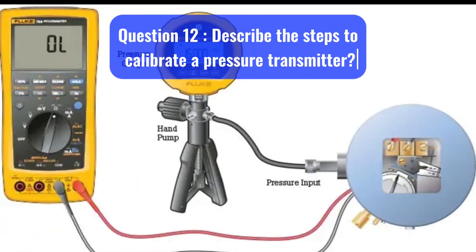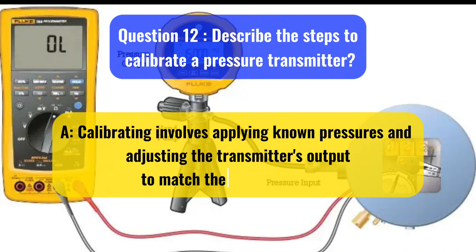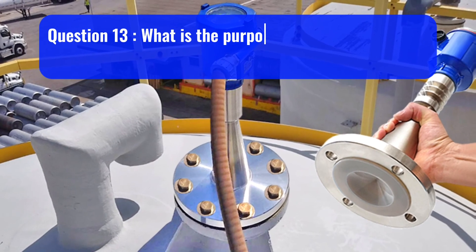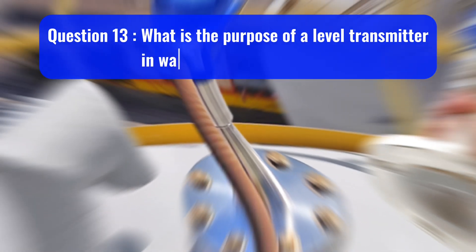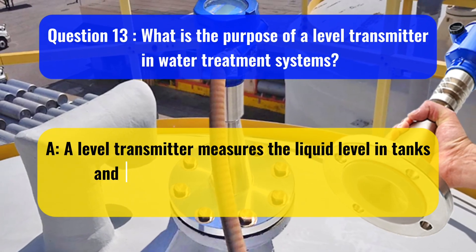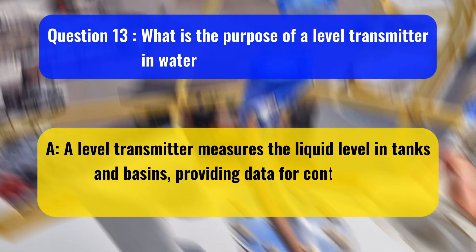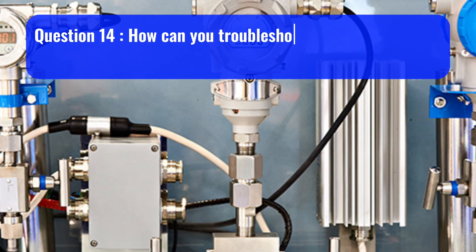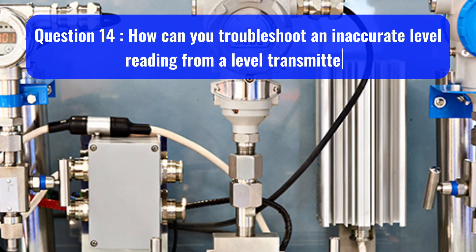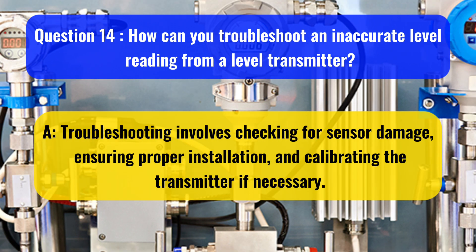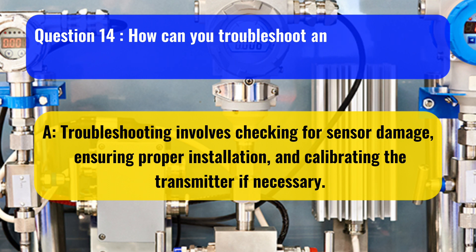Question 12: Describe the steps to calibrate a pressure transmitter. Calibrating involves applying known pressures and adjusting the transmitter's output to match the expected values. Question 13: What is the purpose of a level transmitter in water treatment systems? A level transmitter measures the liquid level in tanks and basins, providing data for control and monitoring purposes. Question 14: How can you troubleshoot an inaccurate level reading from a level transmitter? Troubleshooting involves checking for sensor damage, ensuring proper installation, and calibrating the transmitter if necessary.